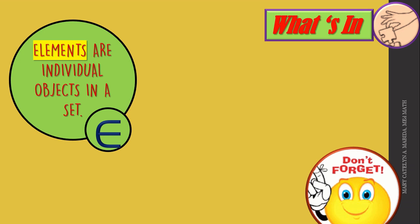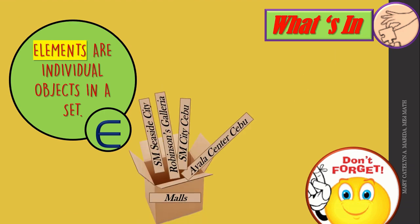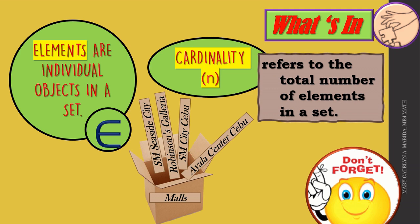Elements are individual objects in a set, denoted by a specific symbol. For example, a set of malls in Cebu City includes SM Seaside City, Robinson's Galleria, SM City Cebu, and Ayala Center Cebu. Cardinality, denoted by a small letter N, refers to the total number of elements in a set. For our set of malls in Cebu City, there are four elements.